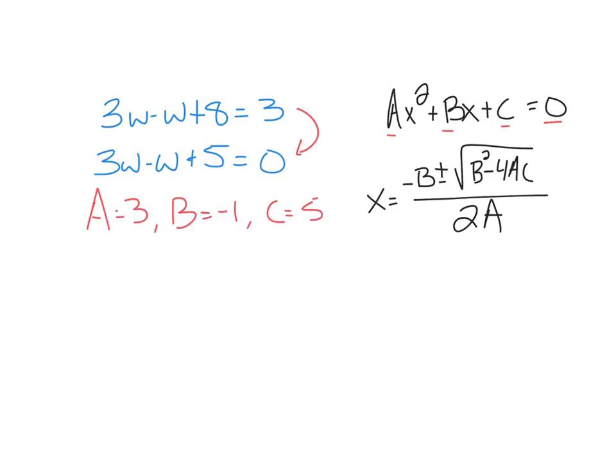All we need to do is plug those values into this quadratic formula. So we get that w equals negative b, which would just be one, plus or minus the square root of b squared, which is one, minus four times three times five, all over two times a, which is three.